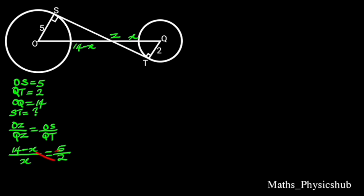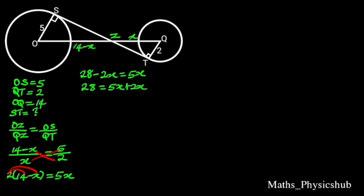By cross multiplication, we have 2 times (14 minus X) equals 5 times X. Distributing 2 into the bracket: 2 times 14 is 28, and 2 times X is 2X, and this equals 5X. Collecting like terms, 2X goes to the right side to become positive. It follows that 28 equals 5X plus 2X, which is the same as 28 equals 7X. To find X, we divide both sides by 7. 7 cancels out 7, and 28 divided by 7 is 4. Hence X equals 4.